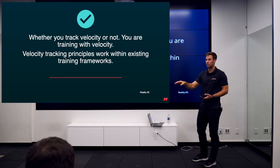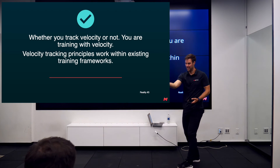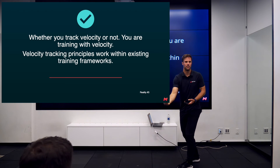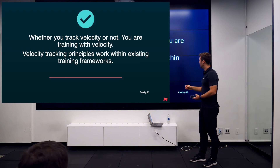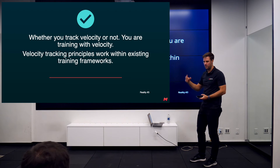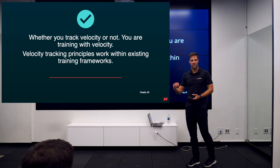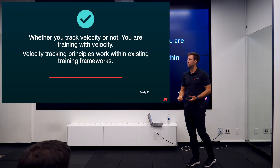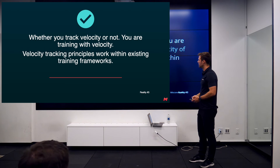Whether you're tracking velocity or not, you're training with velocity. Even doing an isometric is a deliberate absence of velocity. This isn't new or different — we're now just tracking it and putting values on it, so we can prescribe objectively off those numbers. Instead of saying 'that looked fast, that looked easy,' we can say 'that looked fast — exactly this fast.' We can give it a value and a target. Velocity tracking principles work within existing frameworks; they integrate quite nicely.